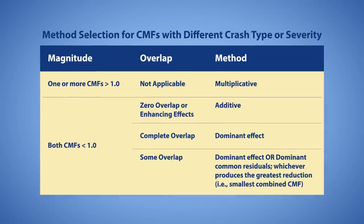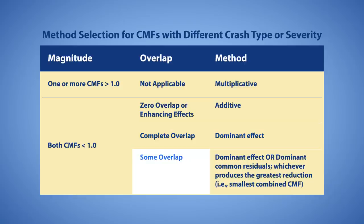You would then use an appropriate method from the table to estimate the change in crashes applicable to two or more CMFs. When two or more CMFs are applicable to the same crash type or severities, follow these rules: if one or more CMFs are greater than one, combine using the multiplicative method; if there is complete overlap in countermeasure effects, use the dominant effect method; if there is some overlap, use the dominant effect or dominant common residuals method, whichever produces the greatest effect.